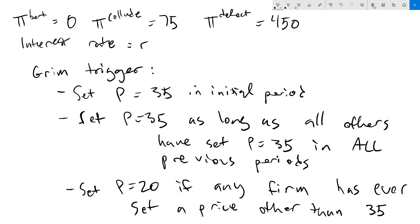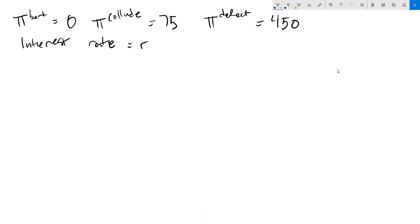We're going to use these profits we calculated earlier to see what is the total present value of the payoffs for following Grim Trigger and for defecting. I'll use a big capital pi for our total value. So for colluding, that is following the Grim Trigger strategy, we're going to be doing 75 forever. According to the Grim Trigger strategy, you set a price of 35 initially. Everybody's going to do that, and we continue doing that as long as everybody else is. And if everybody's doing Grim Trigger, we're going to get that every single period, which is going to give us that 75 payoff every period.